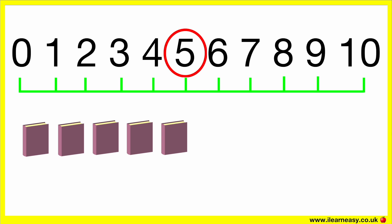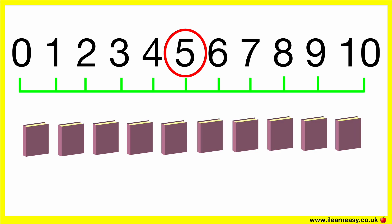How many books are there? Let's count the number of books: 1, 2, 3, 4, 5. There are 5 books. If we want to add 5 more books, then how many books will there be? We just need to count on 5 more to get to 10: 5, 6, 7, 8, 9, 10. So there will be 10 books.